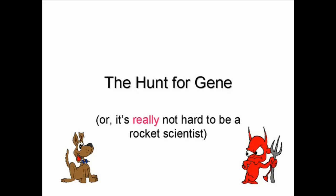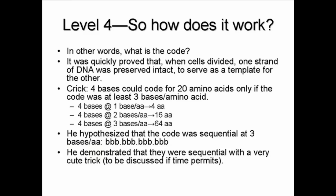Once DNA was identified as the genetic material, the question became: how could a simple molecule consisting of only four bases encode up to 20 amino acids? This challenge was first resolved by some fairly simple mathematics done by Francis Crick. Crick argued that one base could only code for four total amino acids, while two bases could produce 16 different combinations — coding for 16 amino acids.